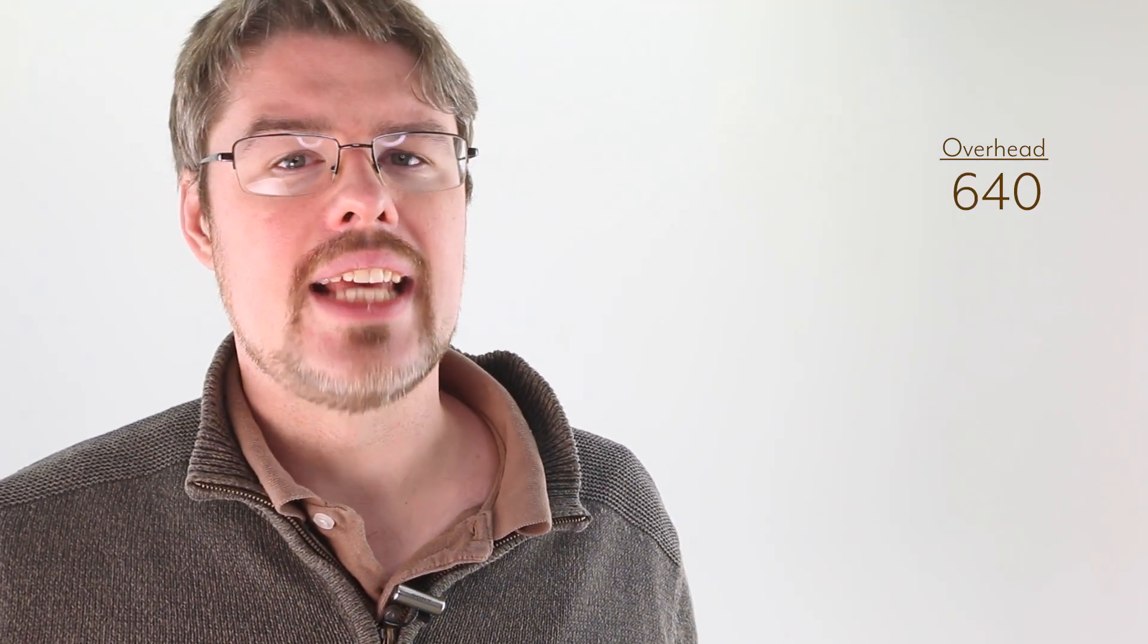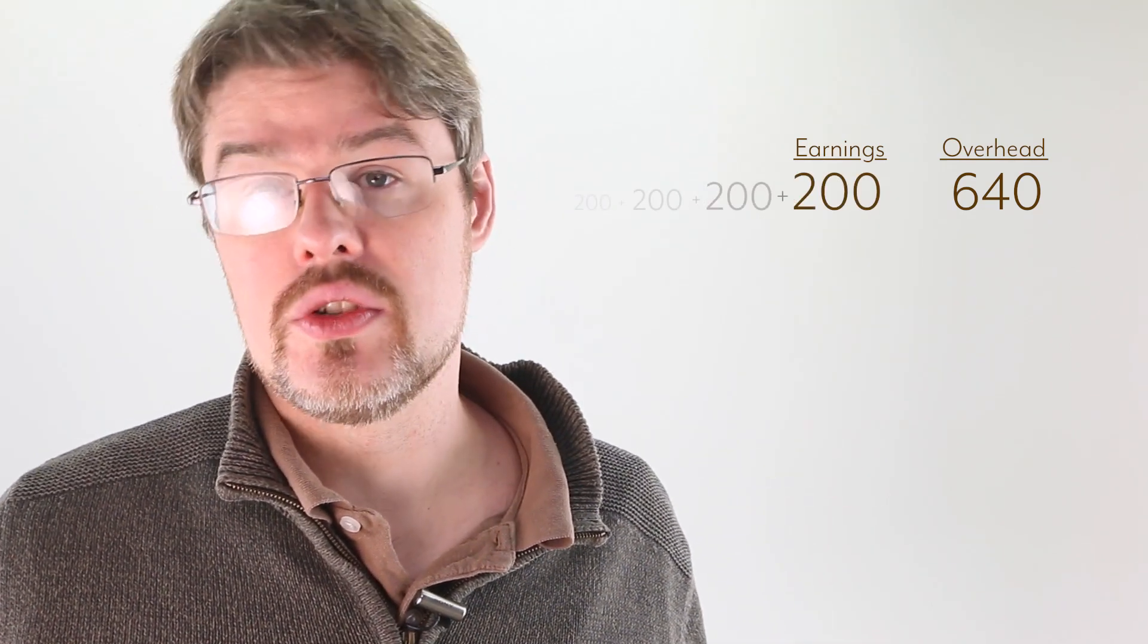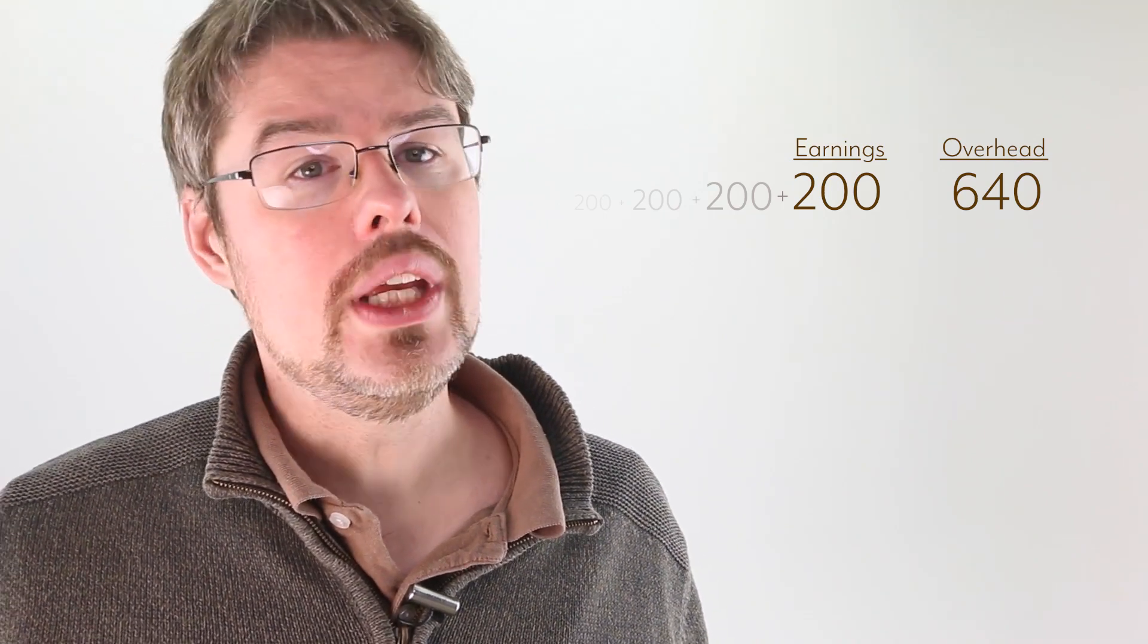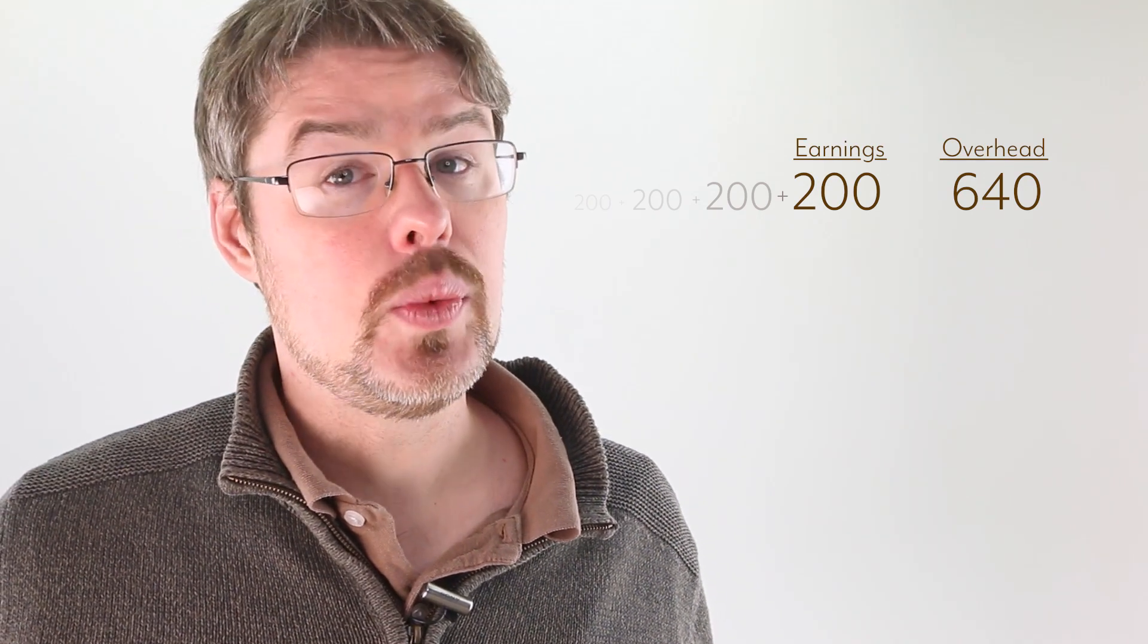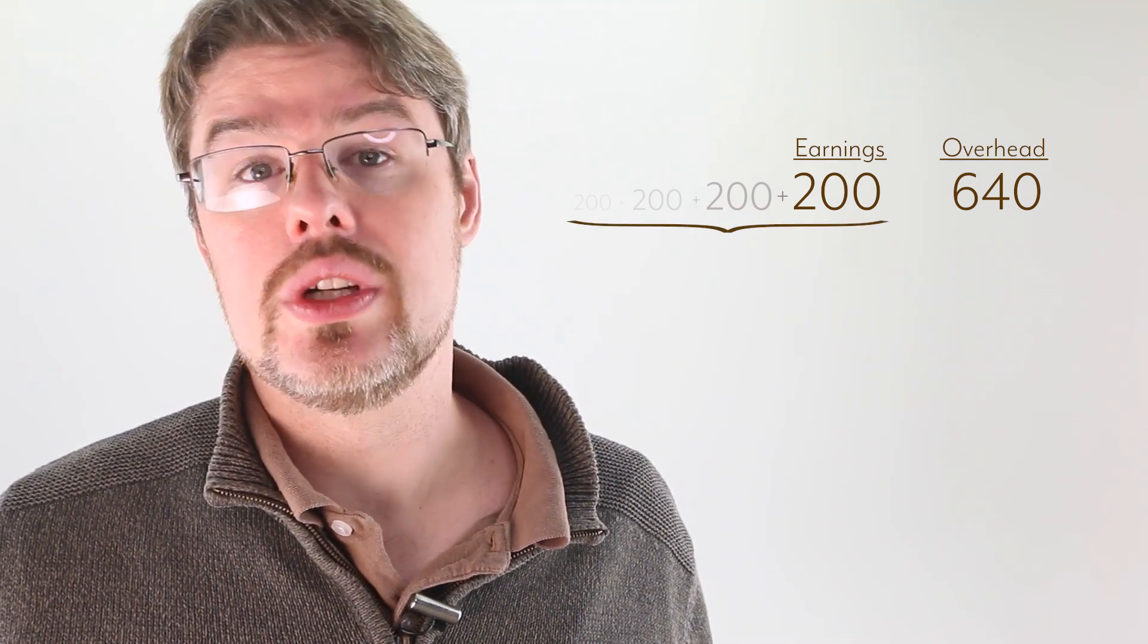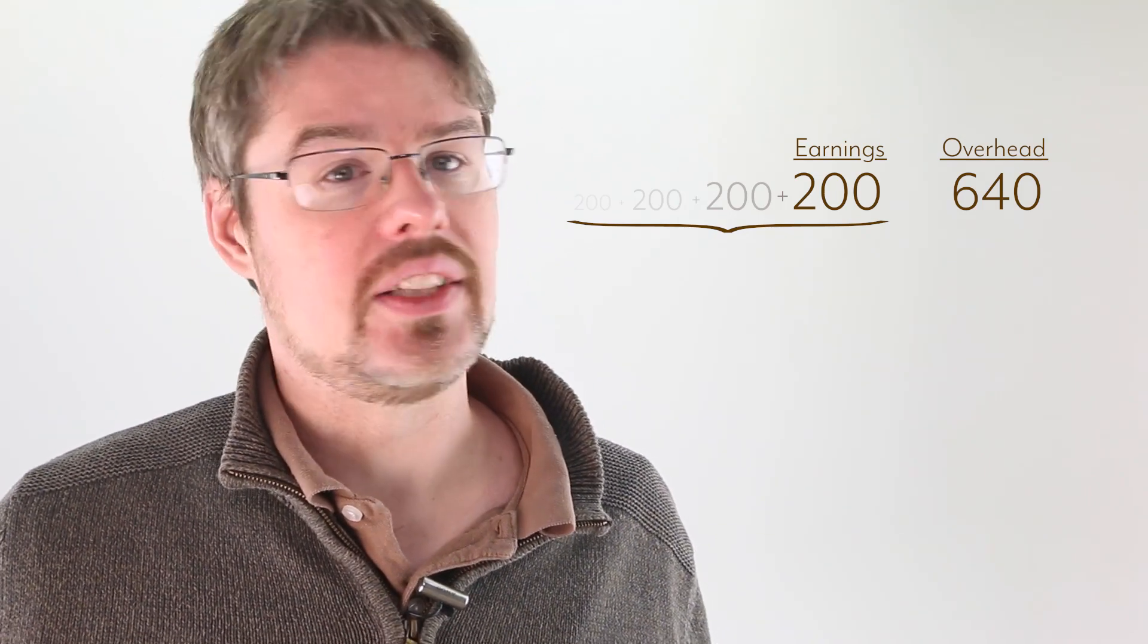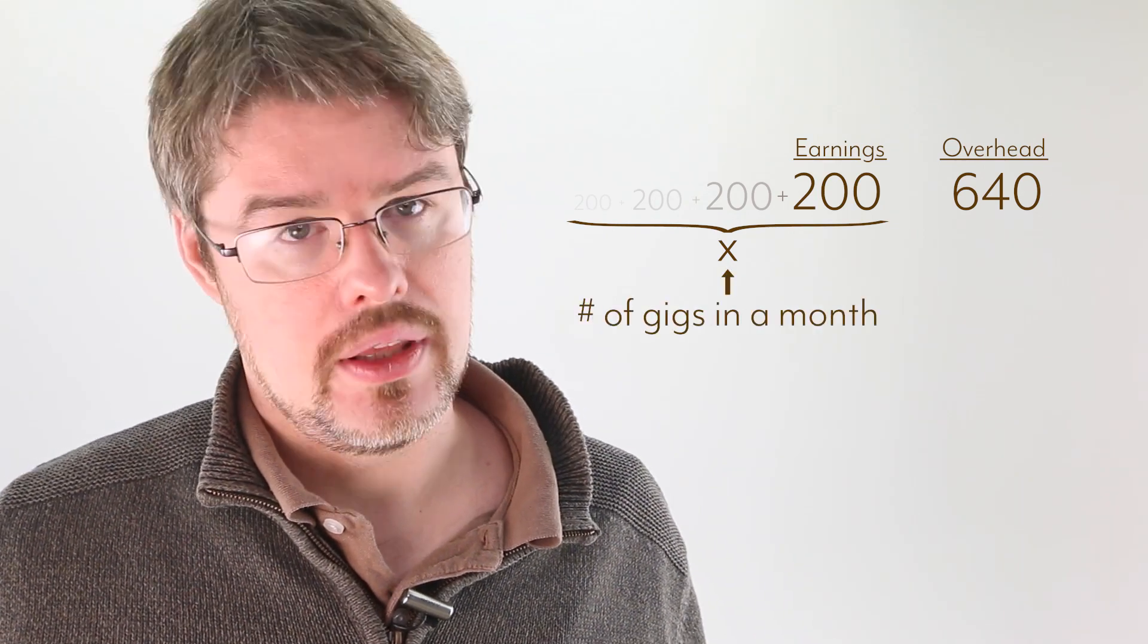The thing we're comparing it against is how much I make in a month, which is basically a string of 200s added together. Each gig will get me another $200. This is repeated addition, so we know that can be written as multiplication. But the problem is that because we don't know how many copies of 200 to add, we don't know what to multiply it by either. That's okay. Let's use a variable and call it x. x represents the number of gigs in a month.